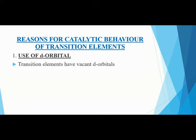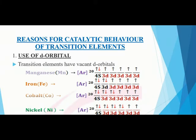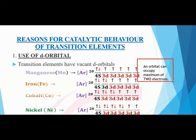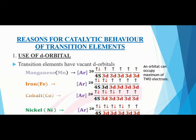Transition elements have vacant d orbitals. If we look at the electronic configuration of manganese, in the valence shell they have paired electrons in the 4s orbital — two electrons in each 4s orbital. But in the d orbitals, there is just one unpaired electron. An orbital can hold a maximum of two electrons, but the d orbitals of transition elements have just one. In order to get these unpaired electrons paired up, they interact with the reactants, activating them and speeding up the chemical reactions.